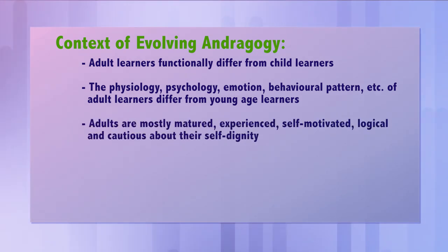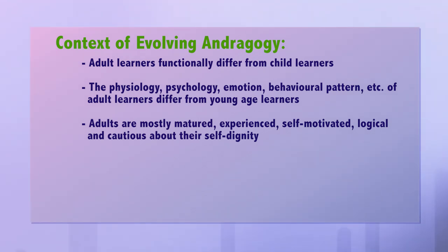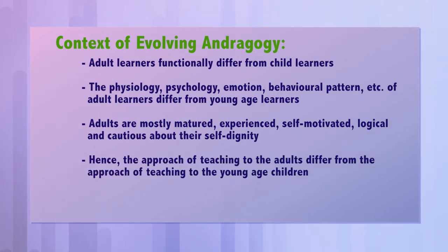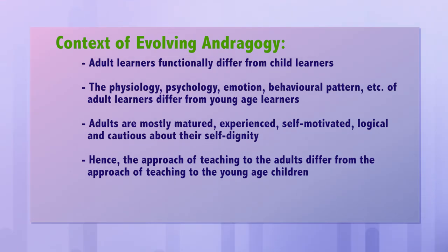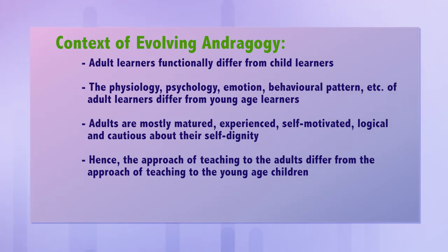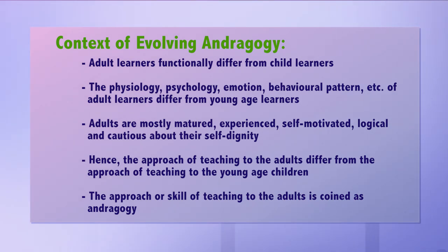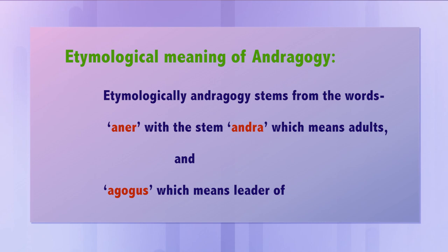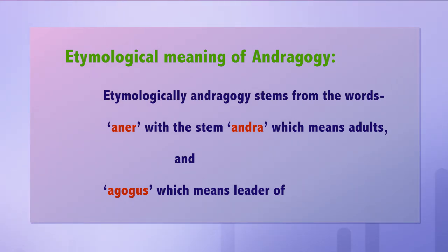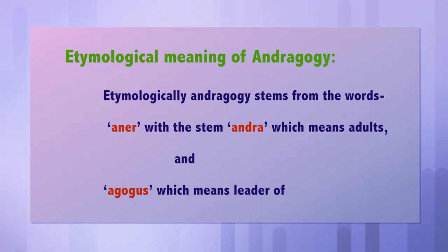Adults are mostly mature, experienced, self-motivated, logical and cautious about their self-dignity. So the approaches and techniques of teaching to adults differ from those used for young age learners or tender age children. The approach or skill of teaching to adults is coined as andragogy. Etymologically, andragogy stems from the word 'anair' with the stem 'andra' meaning adults, and 'agogos' meaning leader of. In this sense, andragogy is the leader or developer of an adult. The way pedagogy deals with young children, andragogy deals with adults.